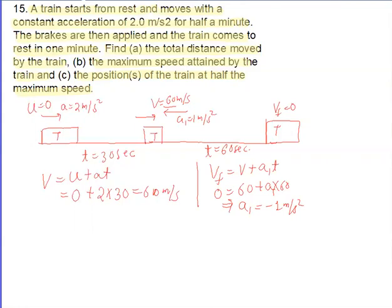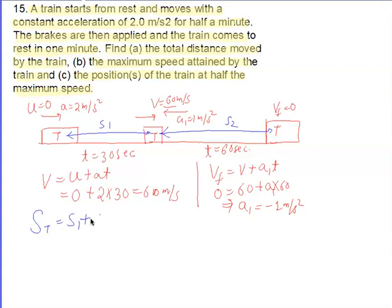Now for the total distance moved by the train: the total distance is S1 plus S2, where S1 is the distance during acceleration and S2 is the distance during braking.